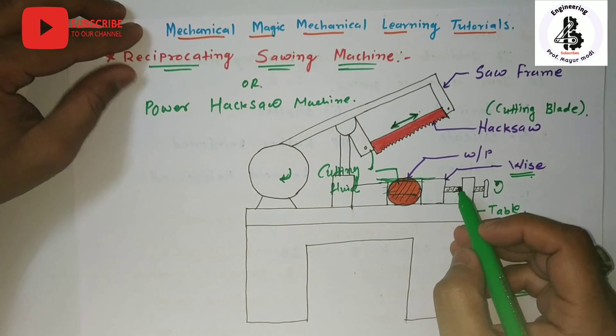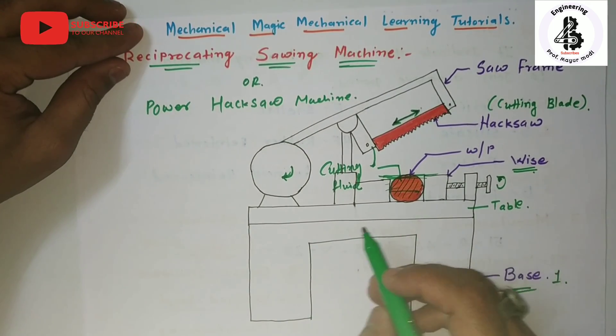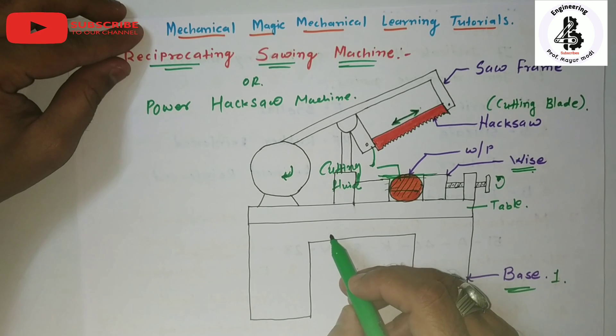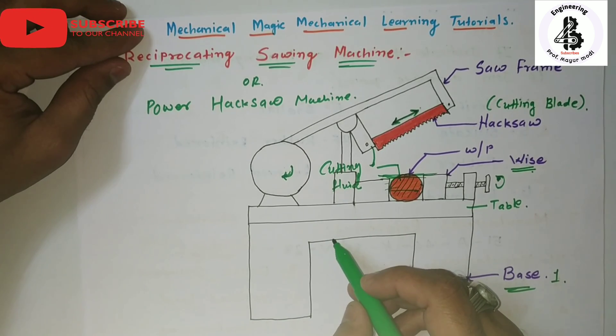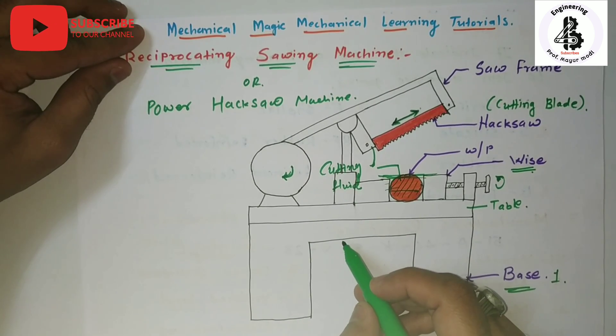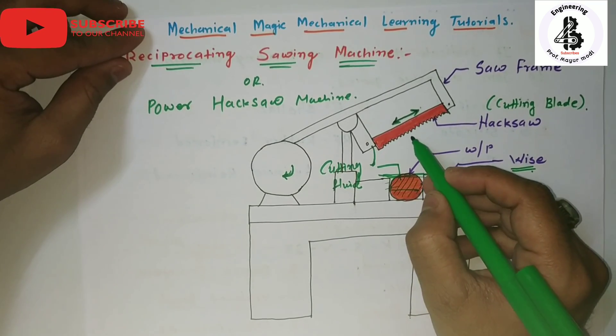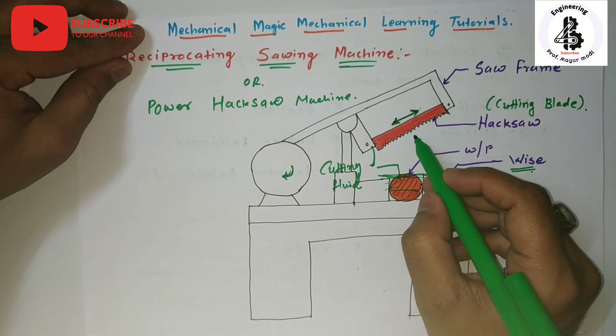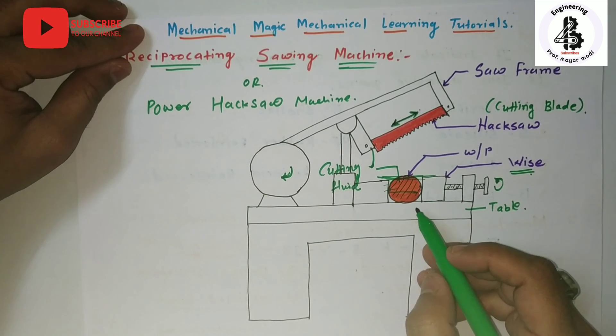In simple way, you can see that a crank mechanism is being provided to raise the blade on each return stroke so the teeth are not damaged. The cutting fluid or lubricant will be used for long blade life.